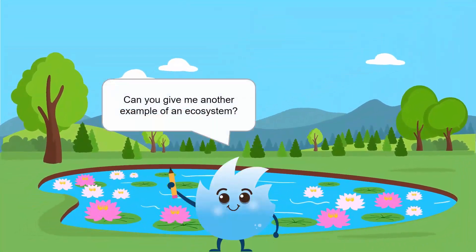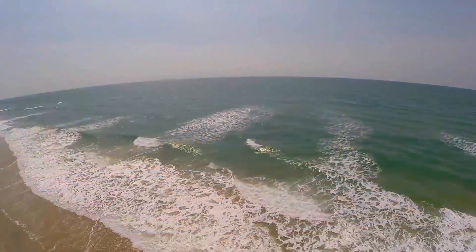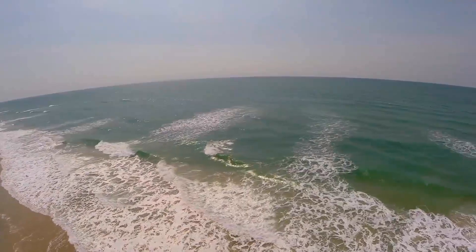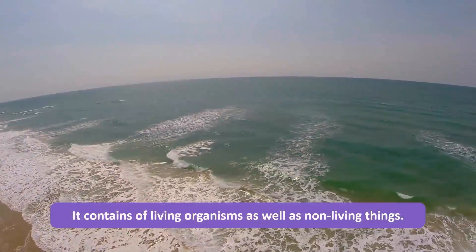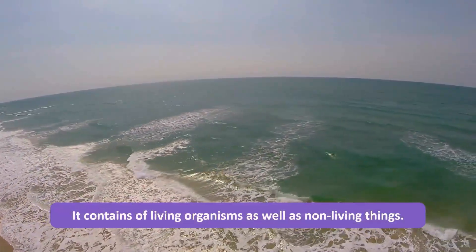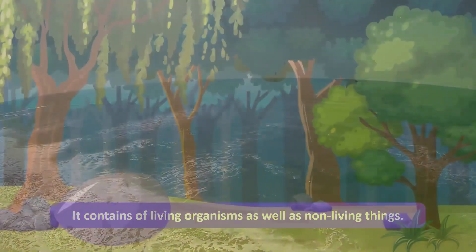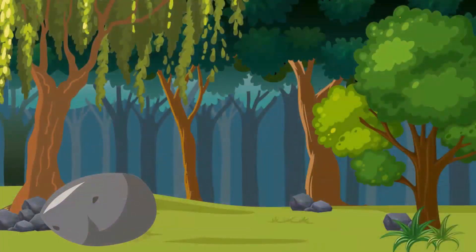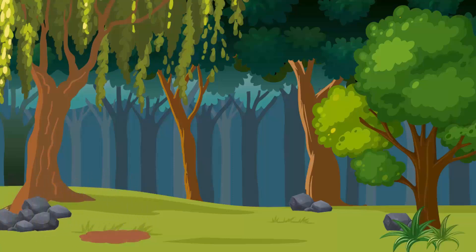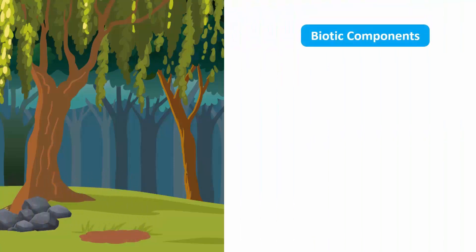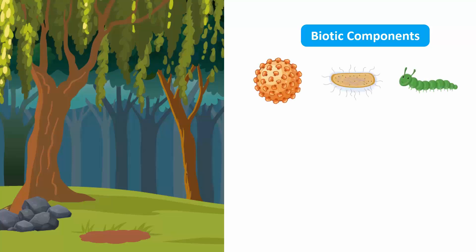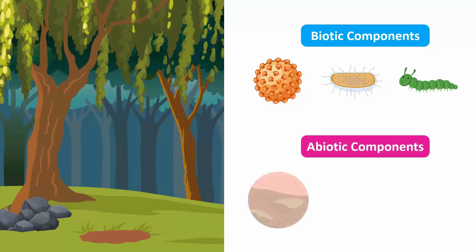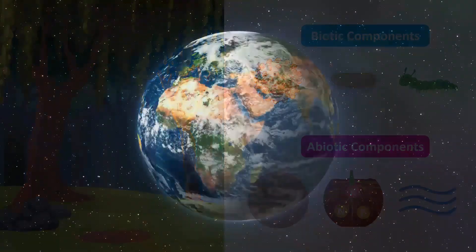Can you give me another example of an ecosystem? Well, the ocean is also an example of an ecosystem — it consists of countless numbers of living organisms as well as non-living things. An ecosystem can also be small, such as the area under a rock. There you will find biotic components like microorganisms and insects, and abiotic components like soil, nutrients, and air.